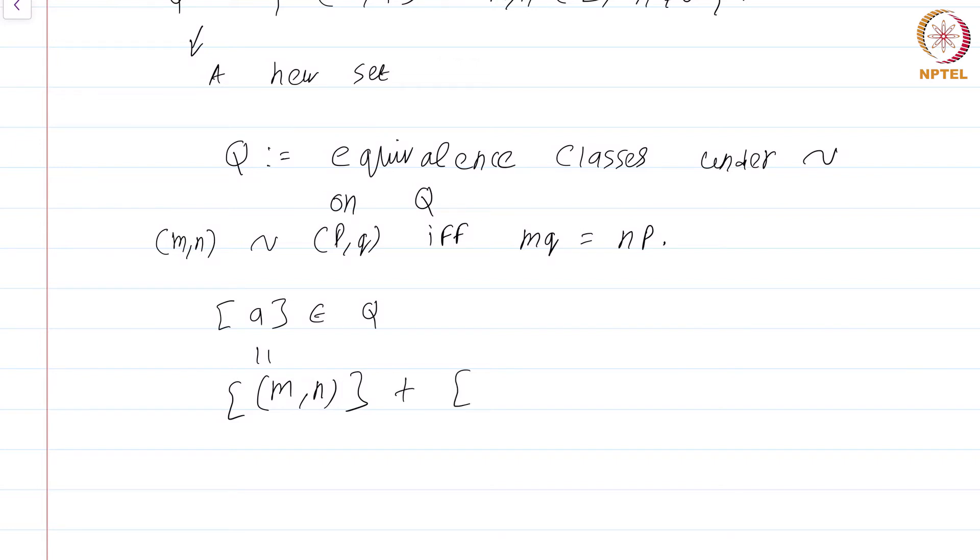What I do is if I take two such equivalence classes, I'm going to define what addition is. The addition is just defined to be equal to (mq + np, nq), the ordered pair given like this.